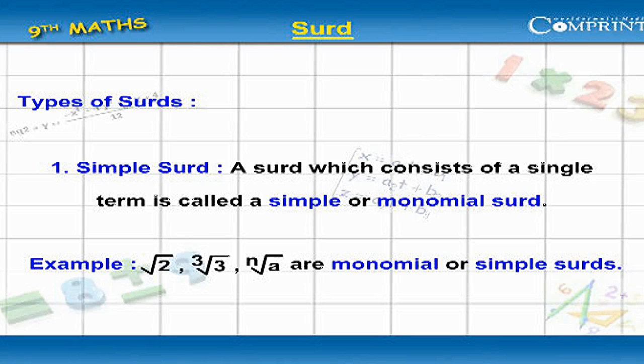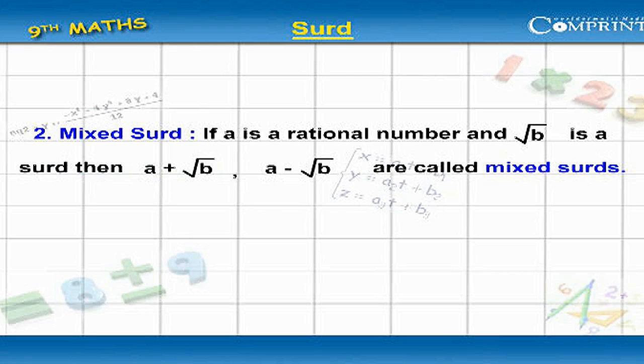Mixed surds: If a is a rational number and root b is a surd, then a plus root b, a minus root b are called mixed surds.